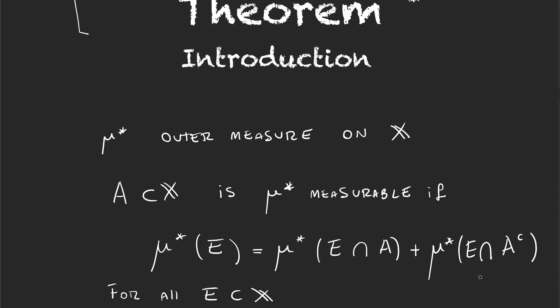These things are all well defined because remember that outer measures were functions that took elements in parts of X and for each of those elements gave them numbers between zero and infinity. So as the outer measure is defined over all subsets of X, μ* of E, μ* of E ∩ A, and the intersection A^c are all well defined.